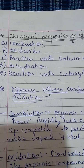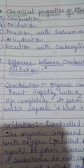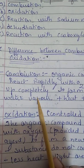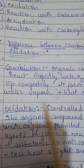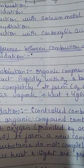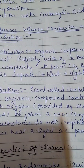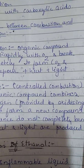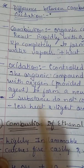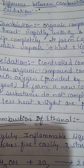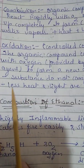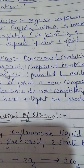First, we need to understand the difference between combustion and oxidation. Combustion of an organic compound means the compound reacts rapidly with oxygen and breaks up completely to form CO2 and water vapor, plus heat and light. Oxidation is a controlled combustion — the organic compound combines with oxygen provided by an oxidizing agent to form a new compound. The substance does not break down completely, and less heat and light are produced.